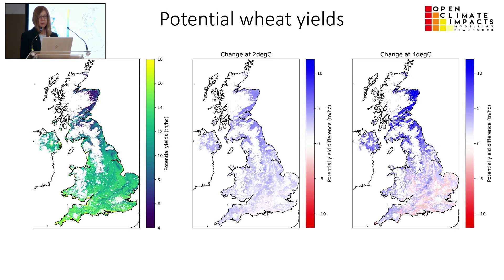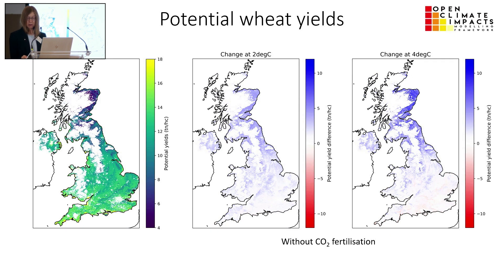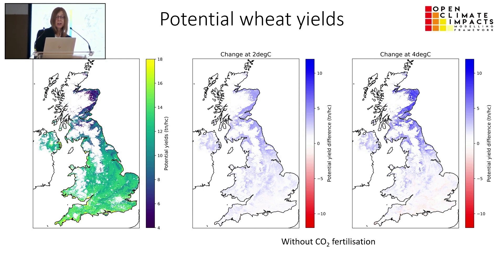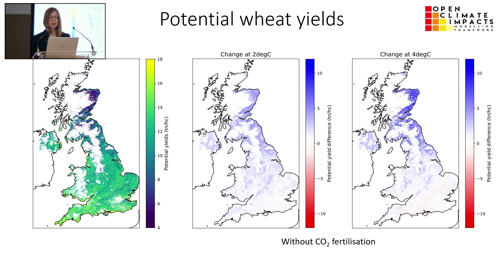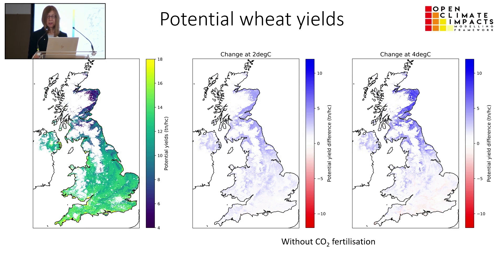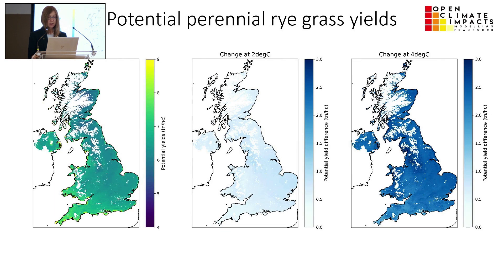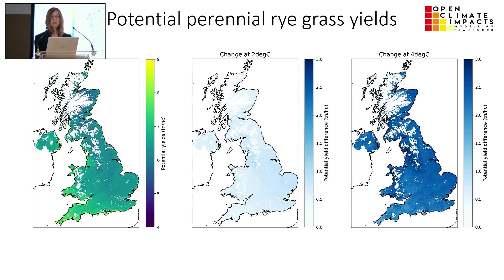These results include CO2 fertilization, which as some of you may know is uncertain — we don't know if that will really materialize. Results are also shown without CO2 fertilization, and in that case the expected increases in yield are smaller. There is also a lot of variation between the ensemble members. For ryegrass, you again see large increases in yield projected as climate warms, but those increases are much less without CO2 fertilization.